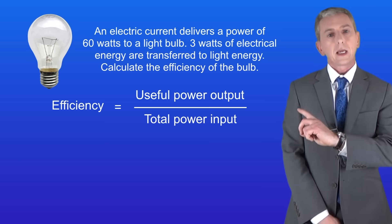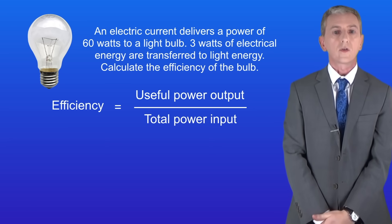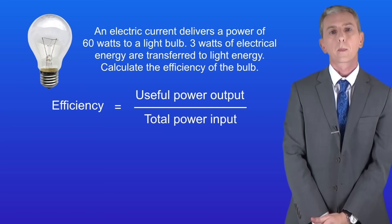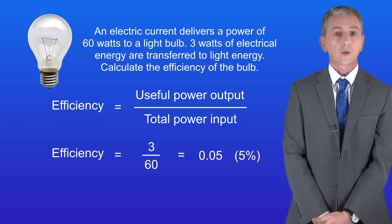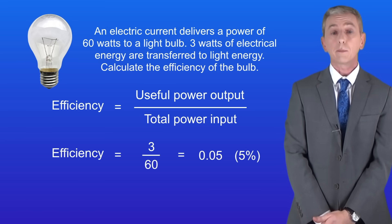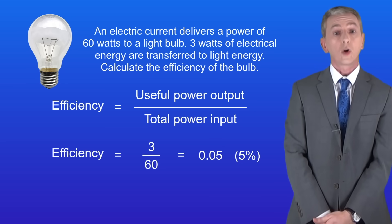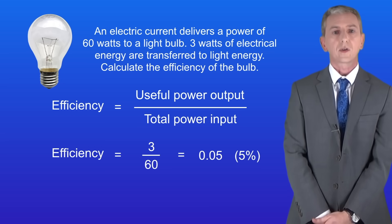So here's the equation that we're going to use. Efficiency equals the useful power output divided by the total power input. The useful power output is 3 watts and the total power input is 60 watts. Putting these numbers into the calculation gives us an efficiency of 0.05 or 5 percent.